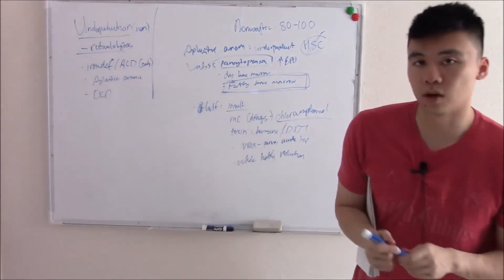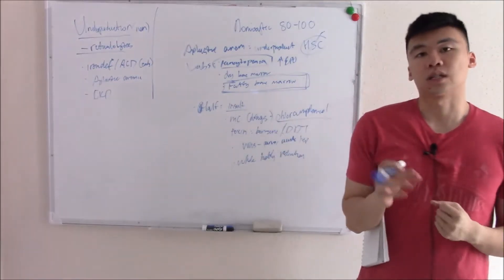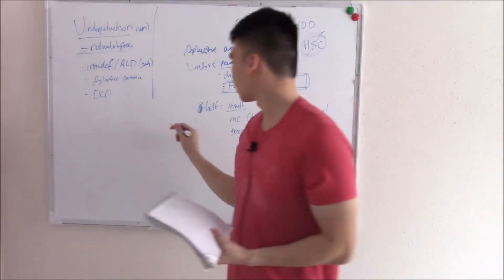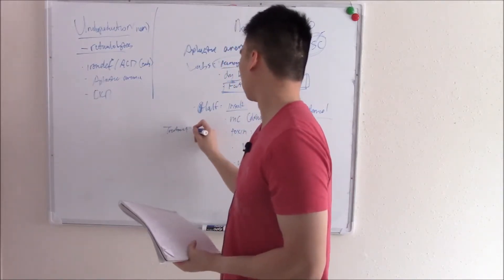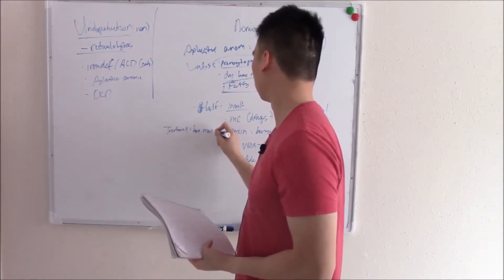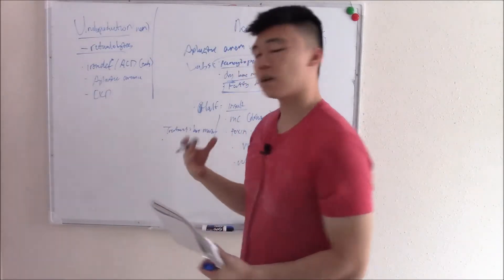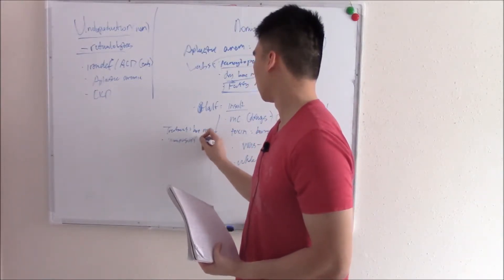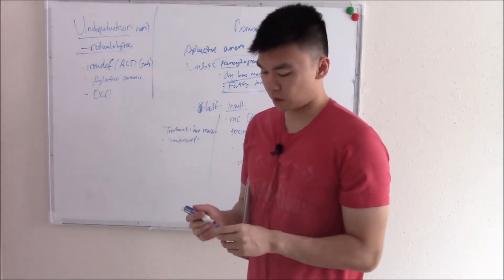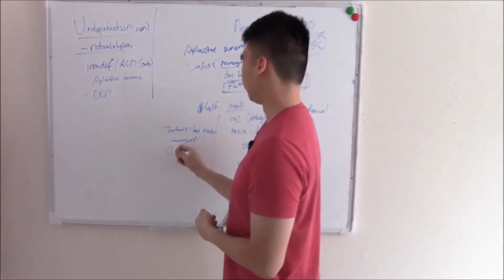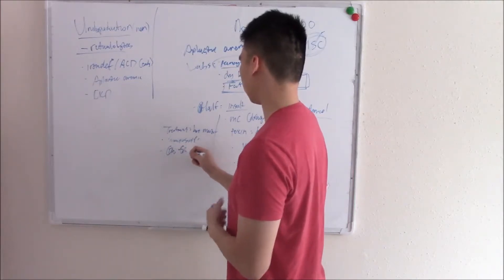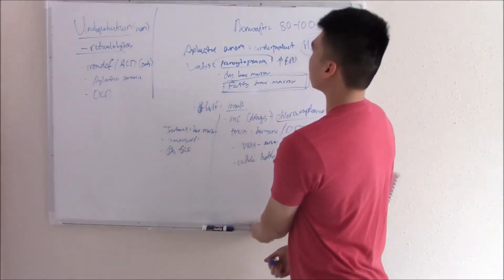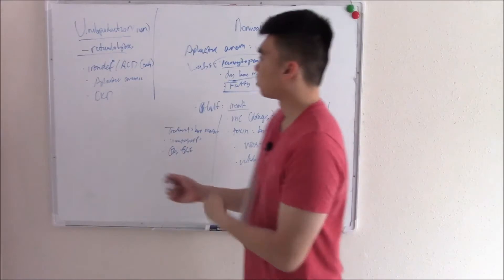Whatever the cause, when your bone marrow is damaged, the only cure is a bone marrow transplant — transplanting new bone marrow stem cells. You can also give immunosuppressants if you suspect an autoimmune cause. You can also try to stimulate whatever bone marrow is left with GM-CSF, which stimulates neutrophil production — not much, but better than nothing.